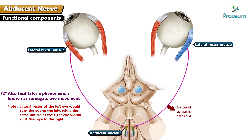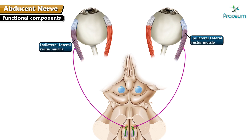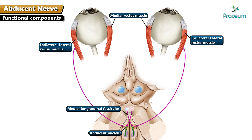Therefore, in the absence of conjugate gaze, the eyes would diverge and the ability to focus on an image would be challenging. Therefore, the 6th cranial nerve not only supplies the ipsilateral lateral rectus muscle, but also influences the contralateral medial rectus muscle. This is made possible by the internuclear neurons found in the 6th cranial nerve nucleus. They form synapses between the motor neurons of the 6th nerve nucleus with the fibers of the medial longitudinal fasciculus. The medial longitudinal fasciculus then synapses with the oculomotor nerve nucleus, which innervates the medial rectus muscle.